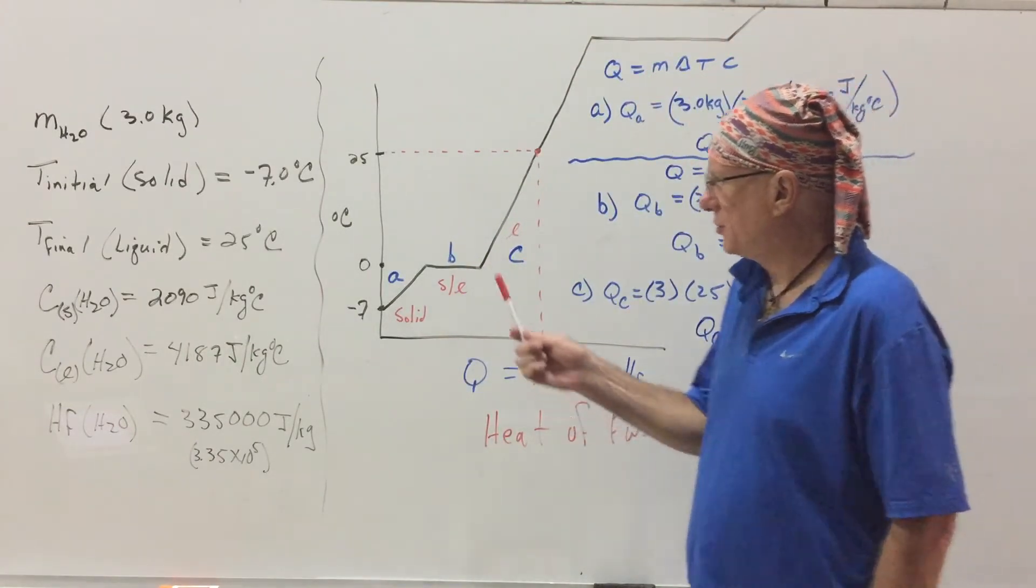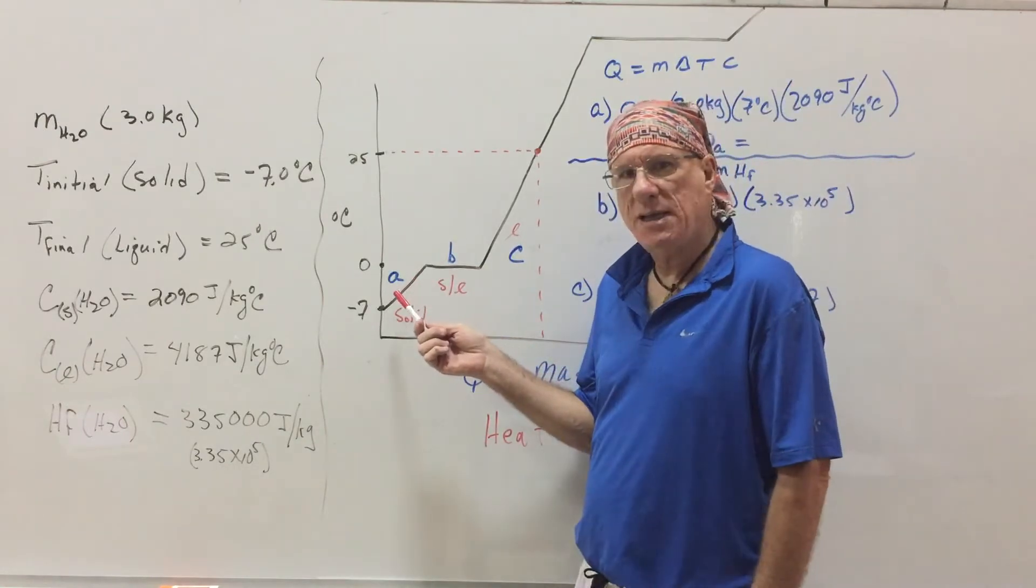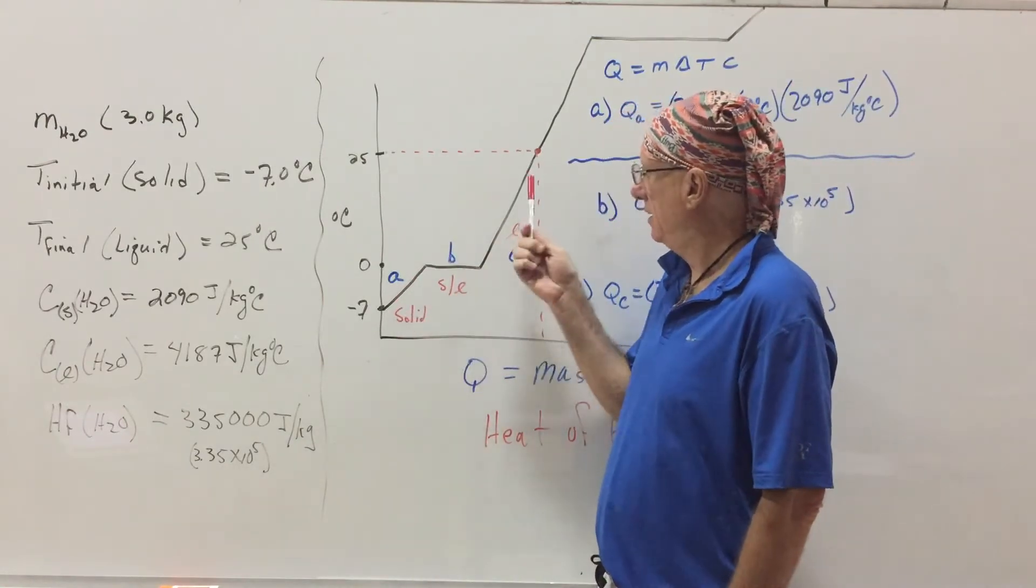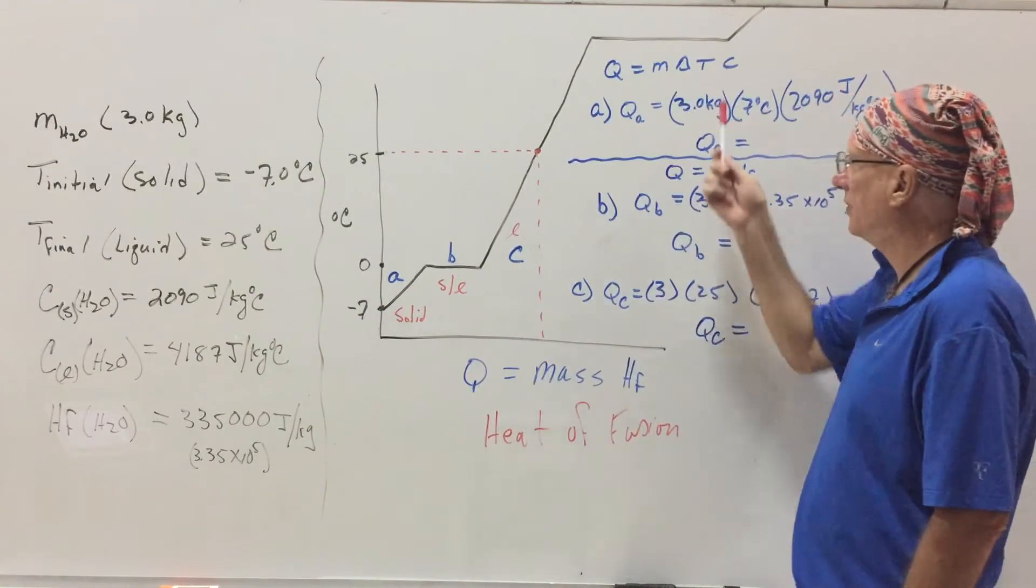So, it's in three parts. We want to do the heat for A, then B, then C. Here it is here.